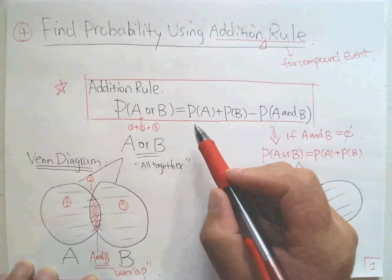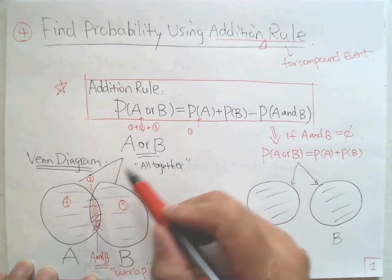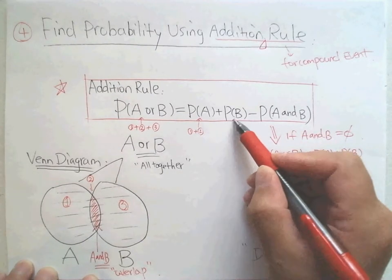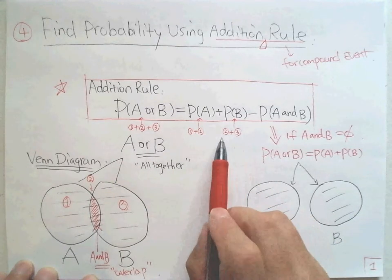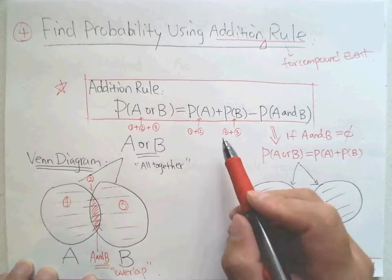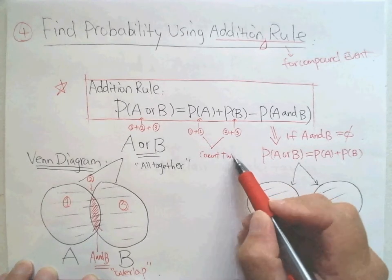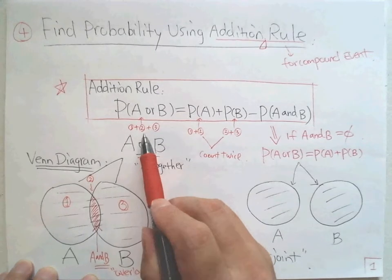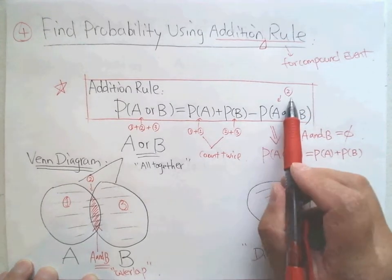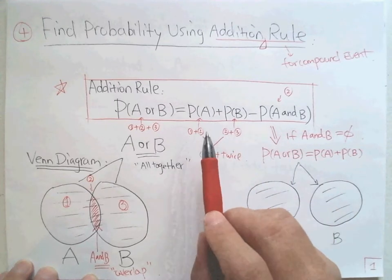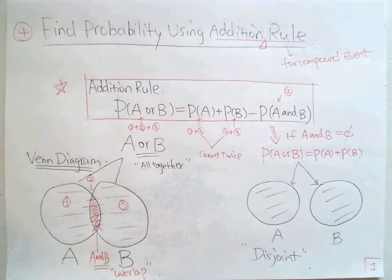What is the right side of the formula? The count for A is part one plus part two. What is B? Part two plus part three. So on the right side, we count part two twice. We cannot count twice because it's only once. So we minus A and B — which is part two — from the right side. Two minus one gives us one, so we have parts one, two, and three left. Therefore the right side equals part one plus part two plus part three — the same as the left side. This is what we call the addition rule.